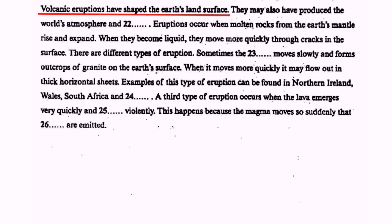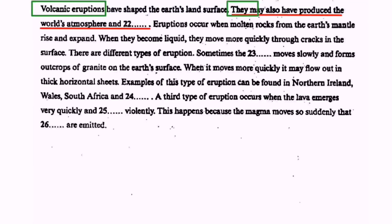Volcanic eruptions have shaped the earth's land surface. First, you need to know what volcanic eruptions mean: when lava and gases are released from a mountain, it is called a volcanic eruption. The sentence says volcanic eruptions may also have produced the world's atmosphere and blank — so we have to find the other thing that volcanic eruptions have produced.